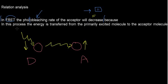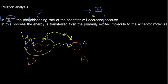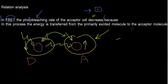Because in this process the energy is transferred from the primarily excited molecule — the donor — to the acceptor molecule. The second statement actually explains why the first statement is incorrect: energy transfers from the donor to the acceptor, and that is why the acceptor is going to photobleach more. Hopefully you found this helpful. See you in the next video.